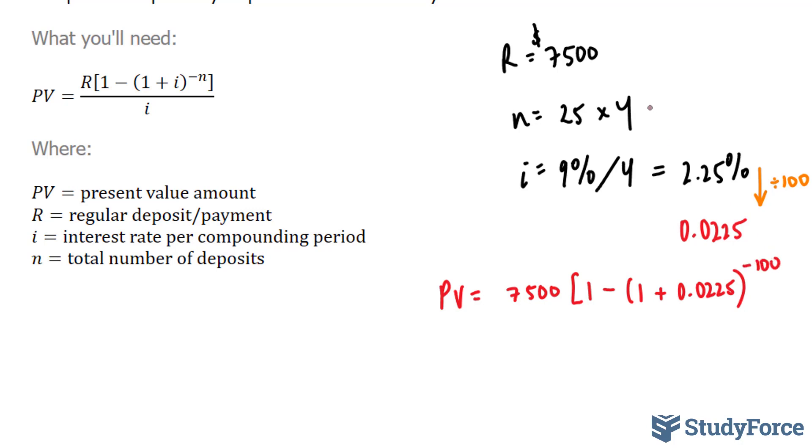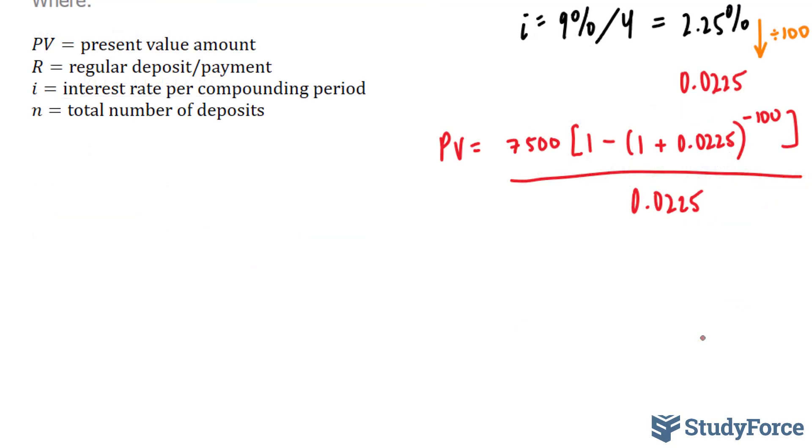7,500, and that's coming from this part right here. Close bracket, all over i, which is represented by 0.0225. To calculate this, we'll use our calculator once again.